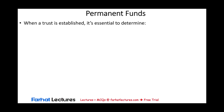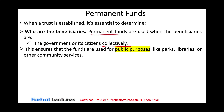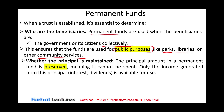When a permanent fund is established, we need to know who the beneficiaries are. Permanent funds are used when the beneficiaries are the government or citizens collectively — at large. This ensures the funds are used for public purposes, such as parks, libraries, and other community services. The principal amount in a permanent fund is preserved. If the principal is not protected, we no longer have a permanent fund. The definition of permanent is something that doesn't go away — the principal amount cannot be spent, but the interest and dividends are available for use.